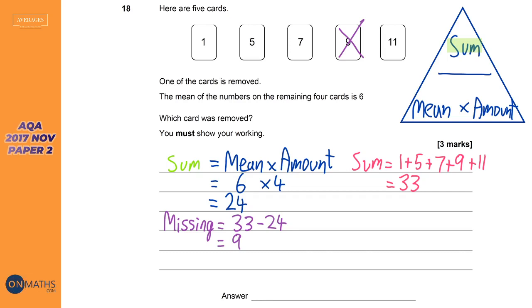You can check: 1 + 5 + 7 + 11 = 24, divided by 4 = 6. Correct! There's nothing wrong with trying all combinations if you didn't see this method — work through each one and check if the mean is close — but the triangle method is so much quicker.